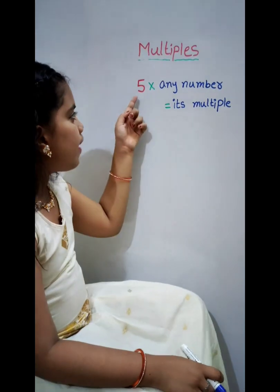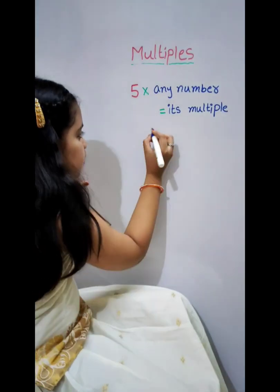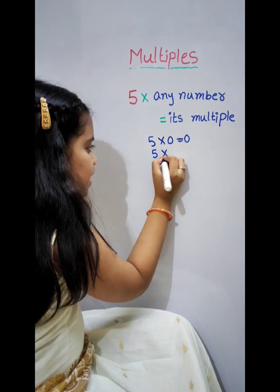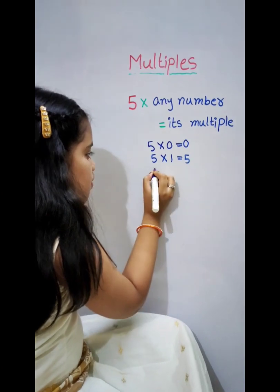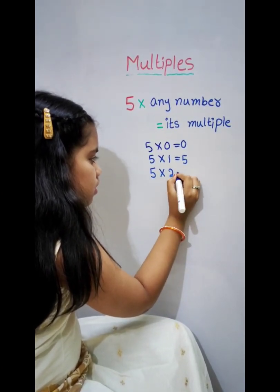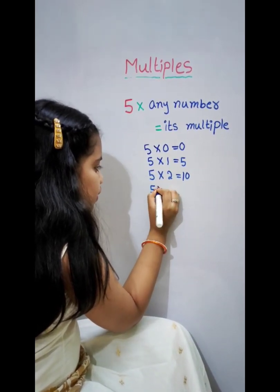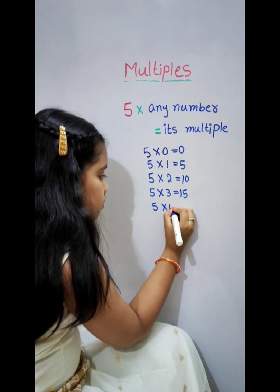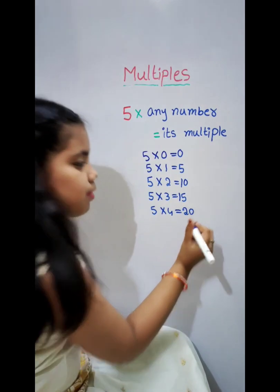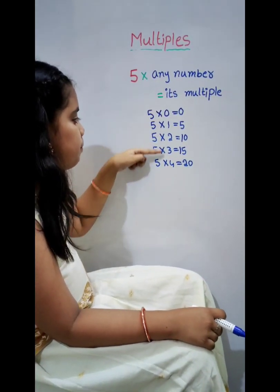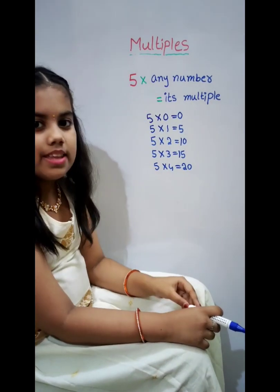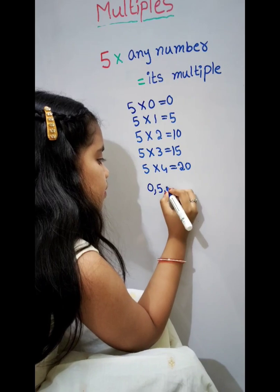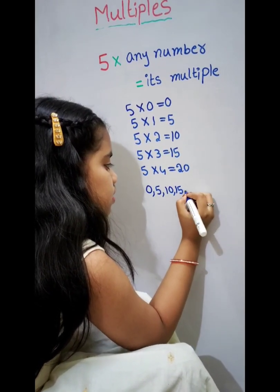For example, multiples of 5. 5 into any number is equal to its multiple. 5 0's are 0. 5 1's are 5. 5 2's are 10. 5 3's are 15. 5 4's are 20. We get a series of multiples by multiplying given numbers by other numbers. The multiples of 5 are 0, 5, 10, 15, 20.